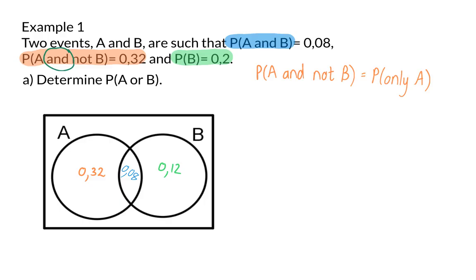Lastly, we need to remember that this complete rectangle is a probability of 1, and that means that if we take 1 and subtract the 0.32, 0.08, and 0.12, we will have 0.48 on the outside of these two events.